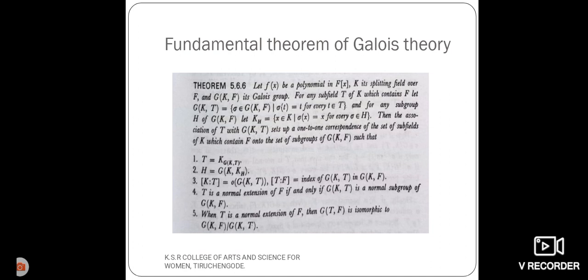First one, the subfield T is equal to K of G(K,T). Next one, H is equal to G(K, K(H)).